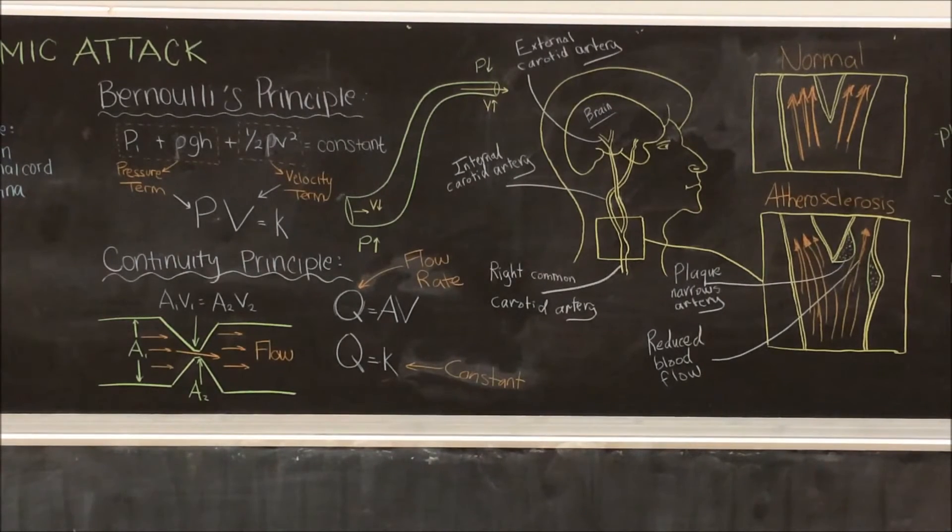Continuity principle deals with the cross-sectional area of the fluid containing blood vessel against velocity. The flow rate is the volume of blood passing a certain point in time which can be defined as the product of the cross-sectional area and the velocity of the fluid.